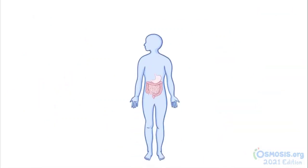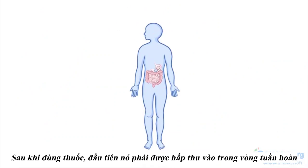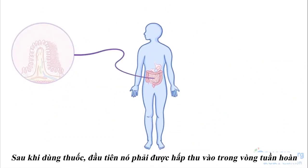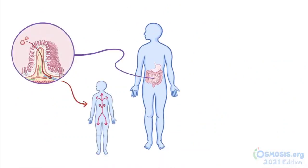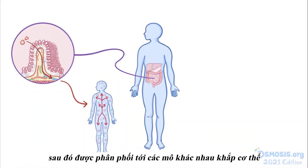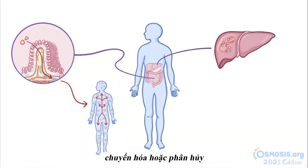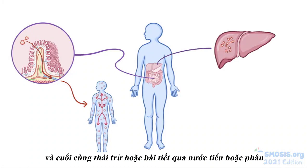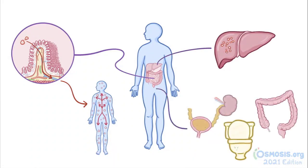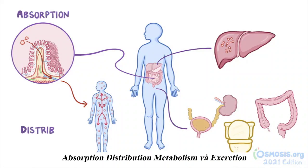Once the medication is administered, it first has to be absorbed into the circulation, then distributed to various tissues throughout the body, metabolized or broken down, and finally eliminated or excreted in the urine or feces. You can remember this as ADME: Absorption, Distribution, Metabolism, and Excretion.